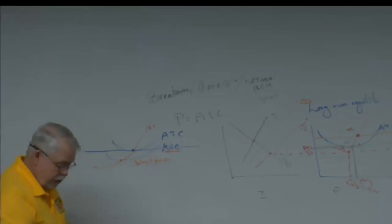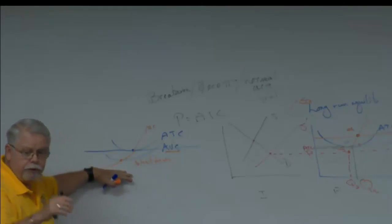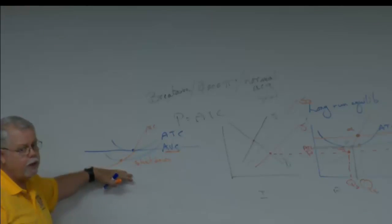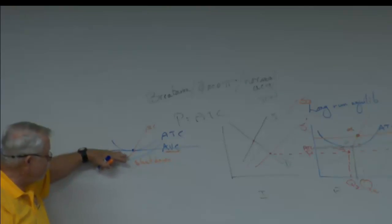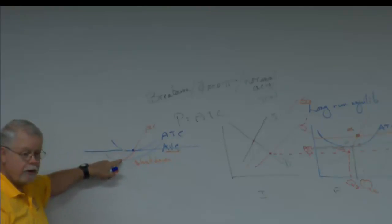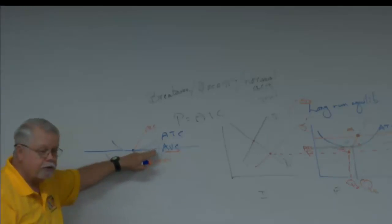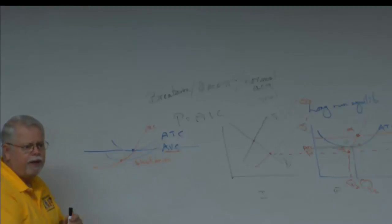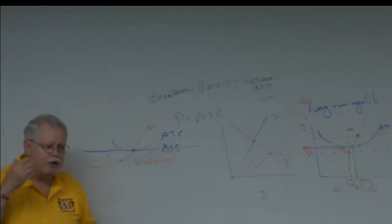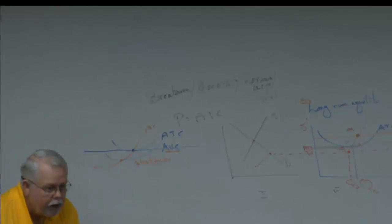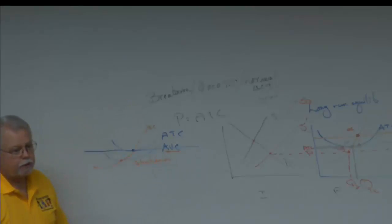If your demand curve drops below the shutdown point, you need to close your business and go fishing, because if you stay open you're losing more money than you need to. But if your demand curve is here, or anywhere between the shutdown point and the break-even point, you still stay open in the short run because you're making enough money to cover your variable costs and some of your fixed costs. That lesson takes a little repetition and thought, but once you learn how to read this graph, the rest are just variations on a theme.